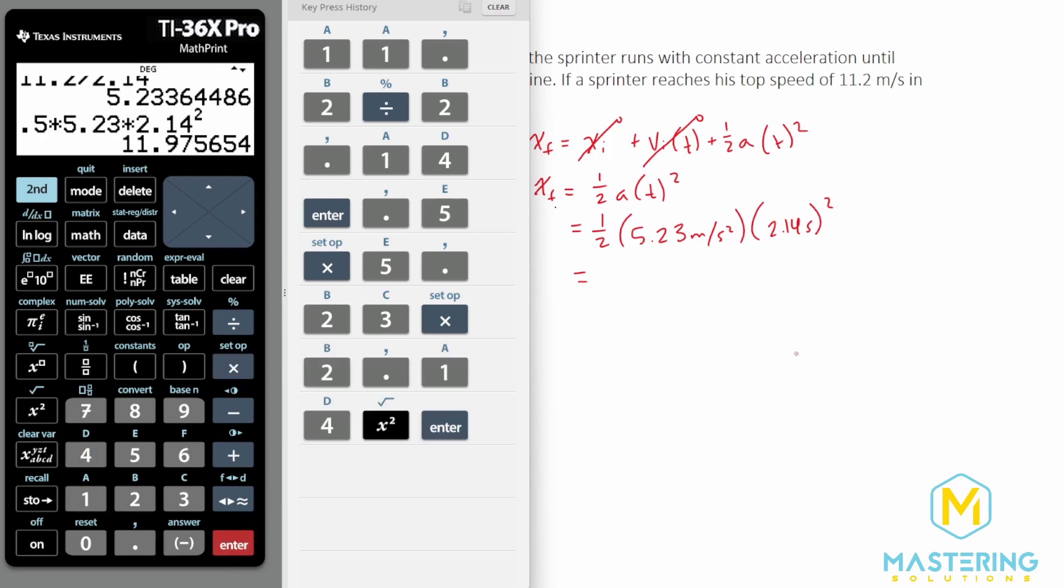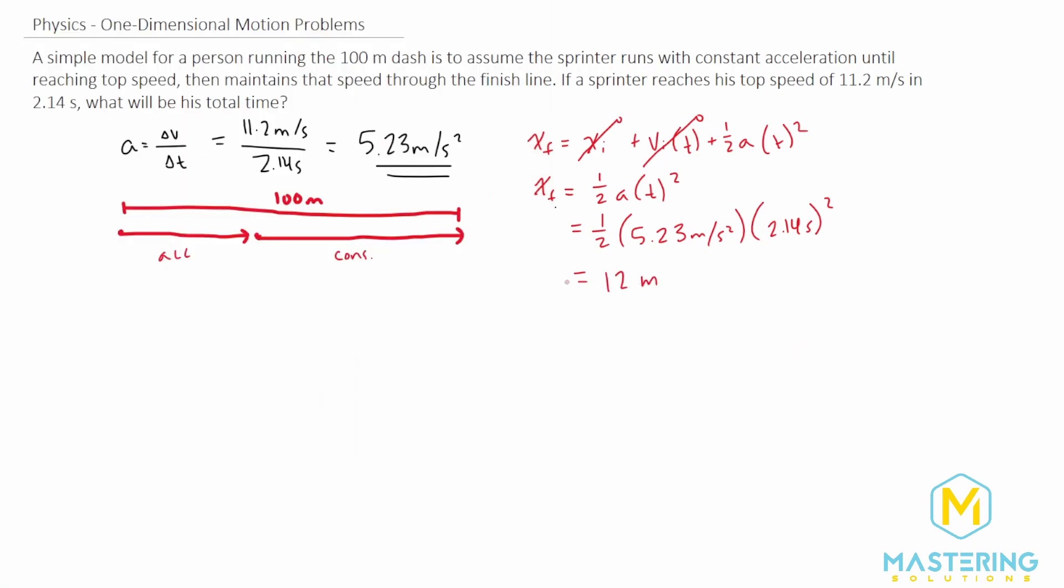This gives us 11.97, so we can round that to 12 meters for how far he went in that first section.